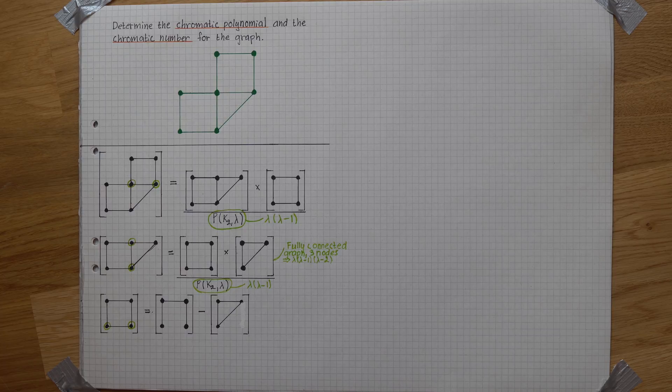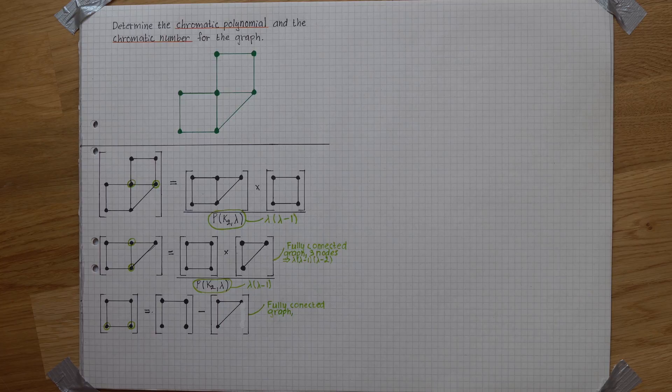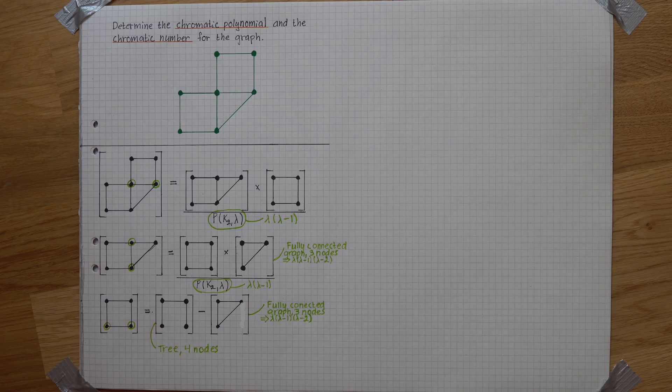This is good because it's giving us a fully connected graph with three nodes and a tree with four nodes, where this four comes from the number of nodes.